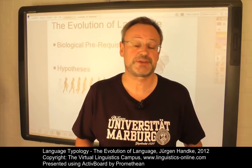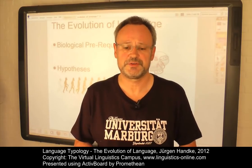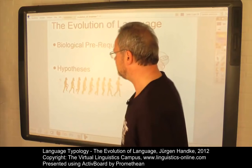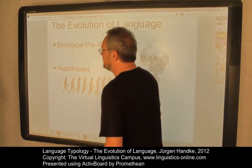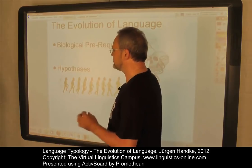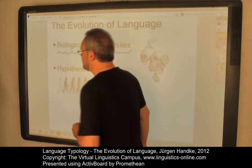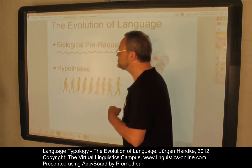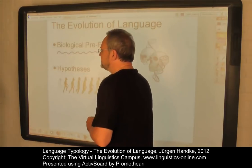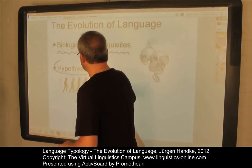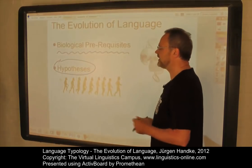Speculation about the origins of human language is as old as history. Although there is disagreement about the exact time, language as we know it today probably appeared relatively late in the prehistory of humans. We will look at two central aspects of language evolution in this e-lecture: first, we will discuss the biological prerequisites for human language, and then we will discuss the main hypotheses about the origin of human language.